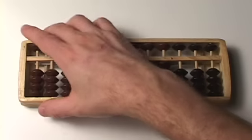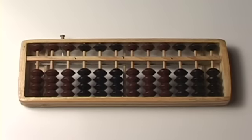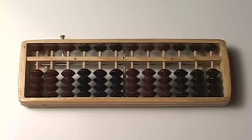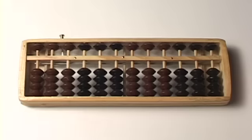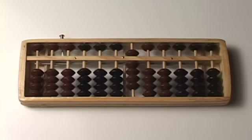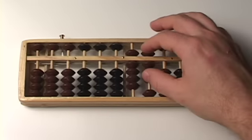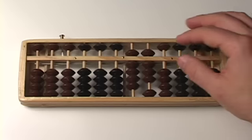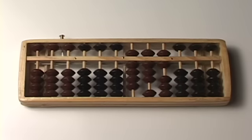All right, here we go. Let's do a massive number, a big massive number. Put the number 986 on your abacus. 986. And we are going to take from that the number 555.